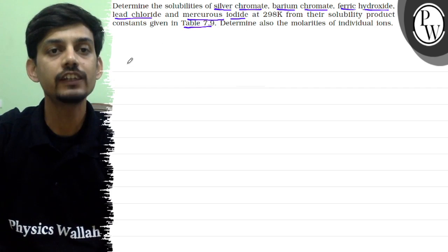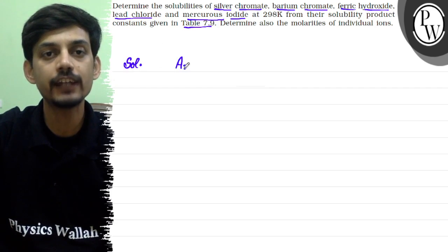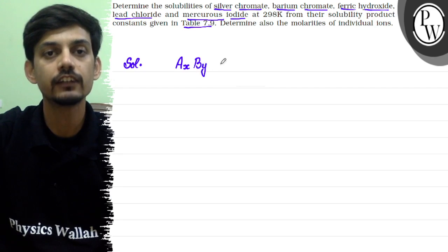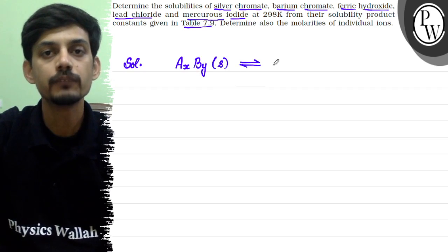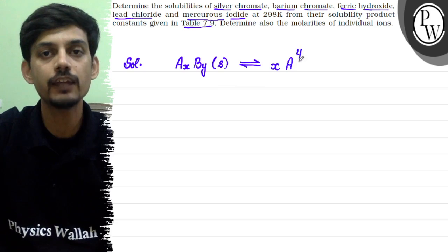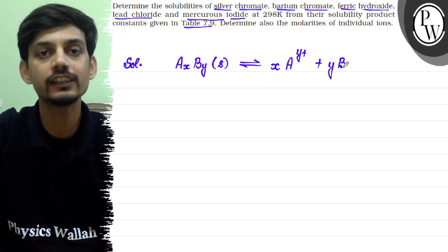First, let's consider the general case: if any salt is of type A_x B_y — meaning a ratio of X to Y — when we dissolve this salt, it gives X moles of A ion with charge y-positive, and Y moles of B ion with charge x-negative.